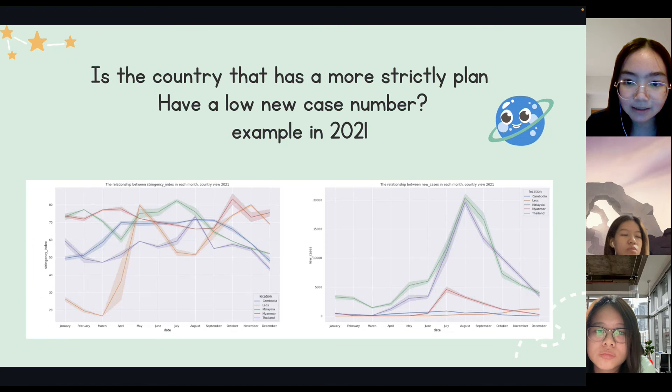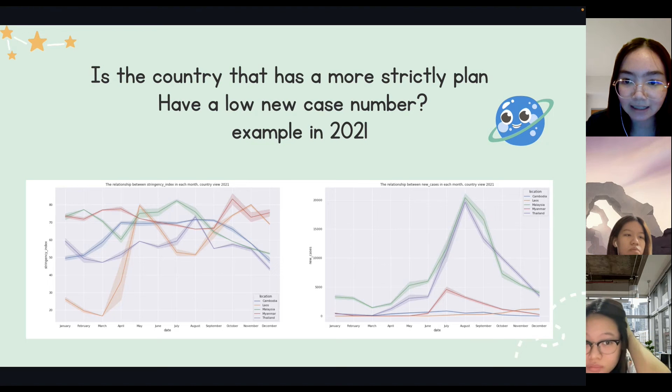Next is the relationship between stringency index in each country. This showed that countries with the most stringent epidemic measures are countries with the high stringency index. So at this point, in the country with a high stringency index such as Thailand, Myanmar, and Malaysia, there are new cases that have decreased.